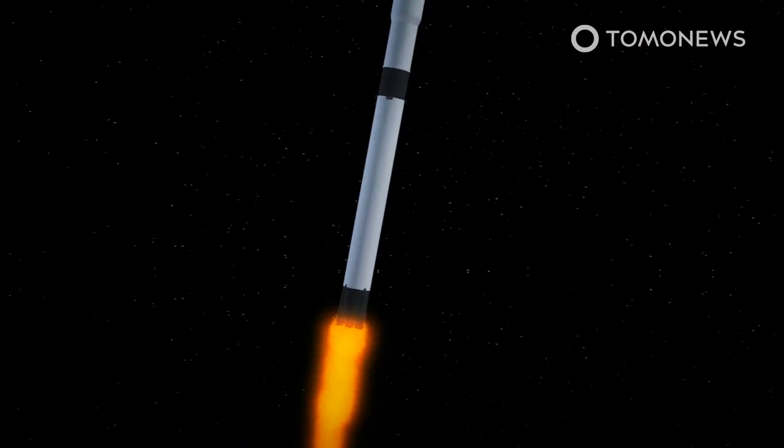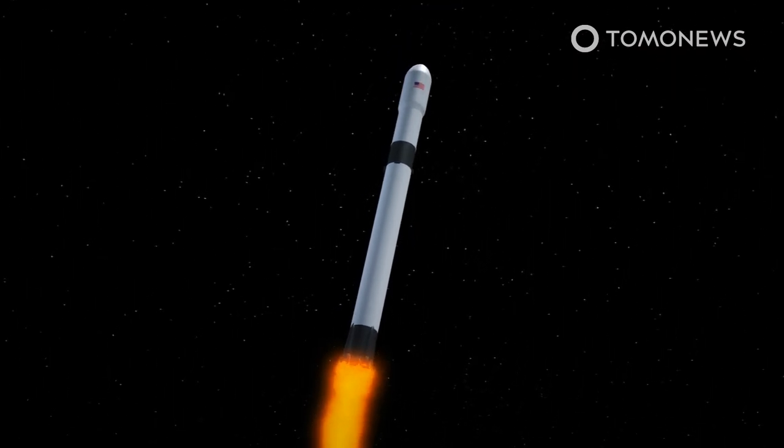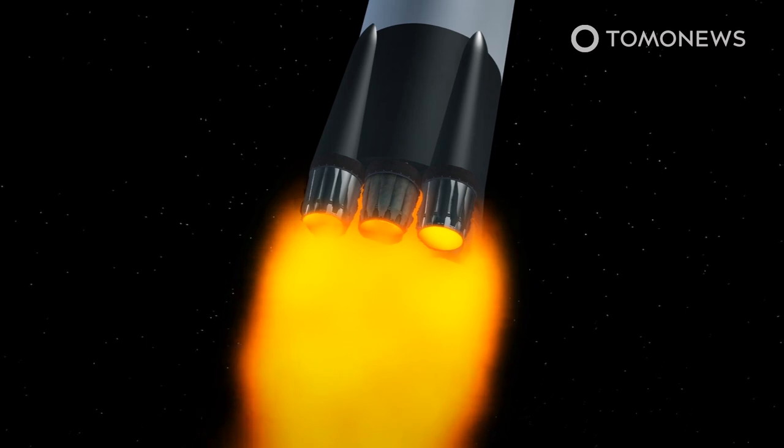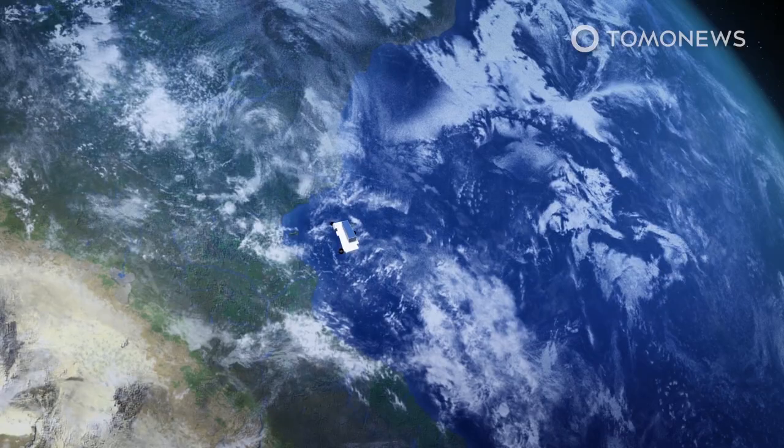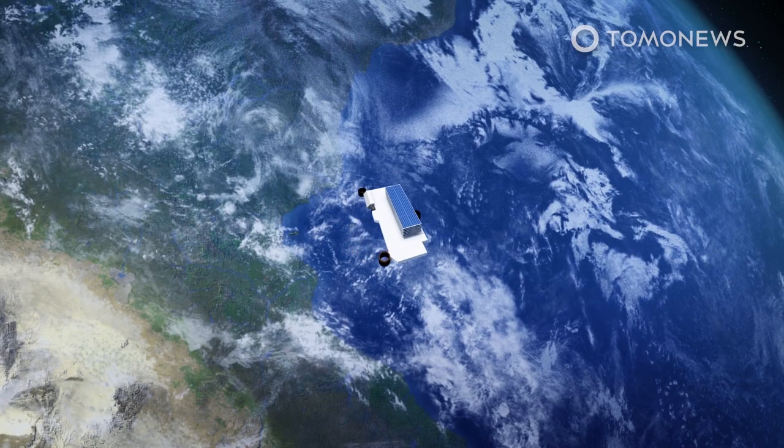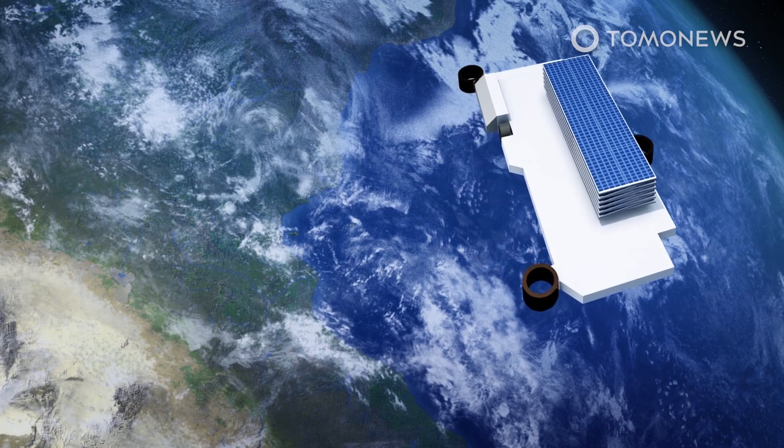According to SpaceX, Falcon 9 is a reusable first-stage booster with nine Merlin 1D engines that put out more thrust than five Boeing 747s at full power. The payload of 60 small satellites rides atop the rocket into orbit. According to SpaceX, Starlinks are telecom satellites that feature ion thrusters for maneuvering into position and articulated solar arrays.